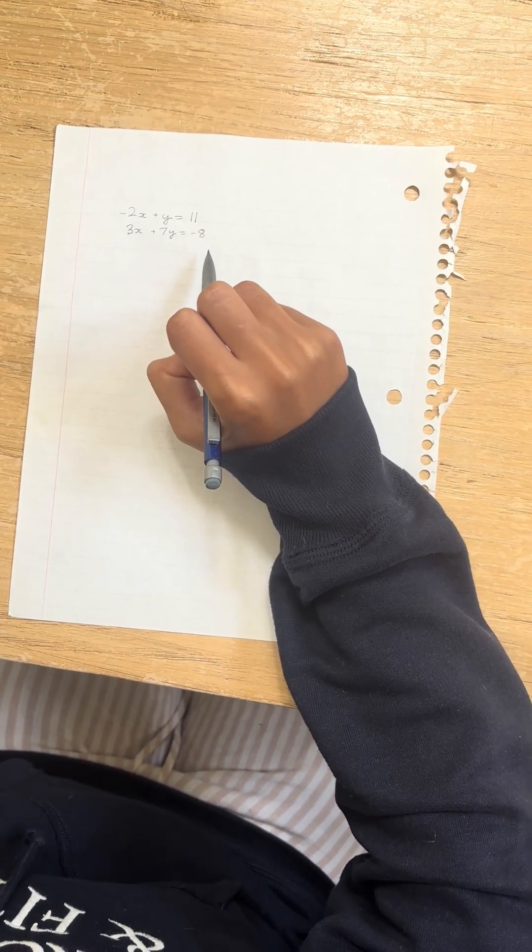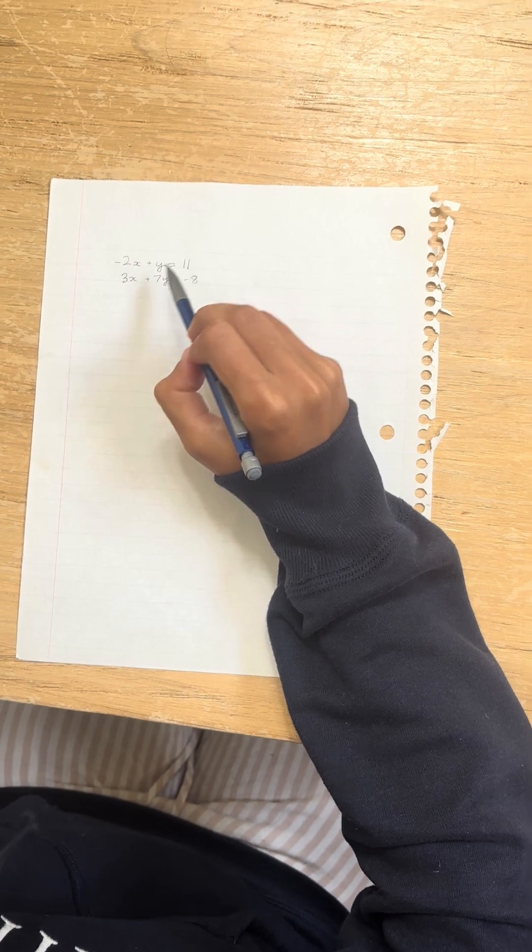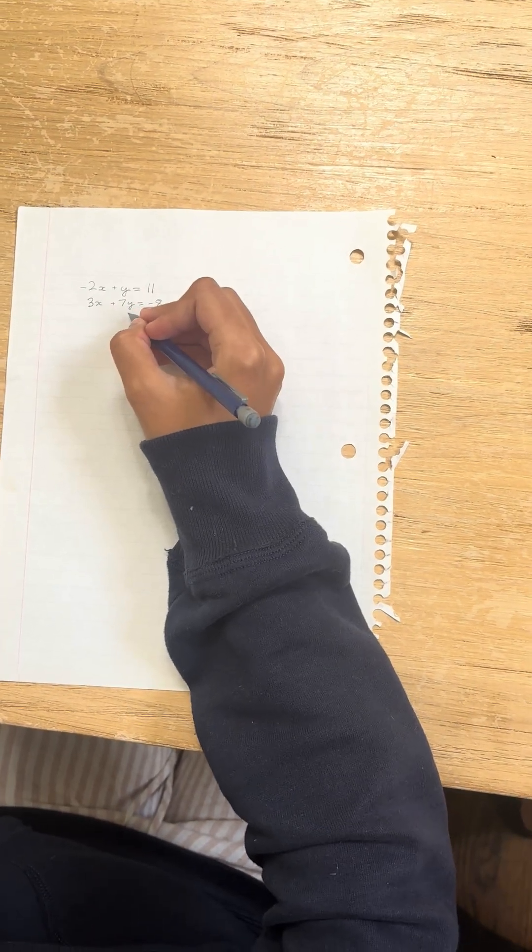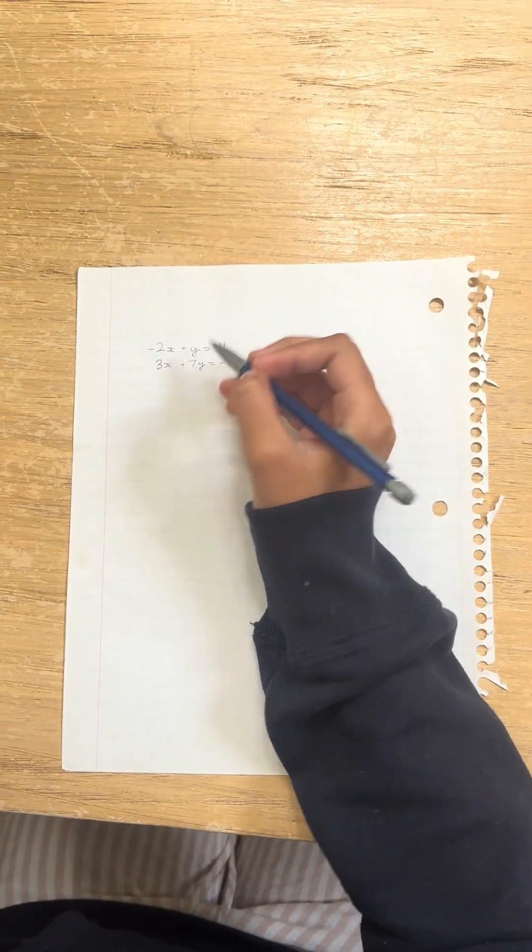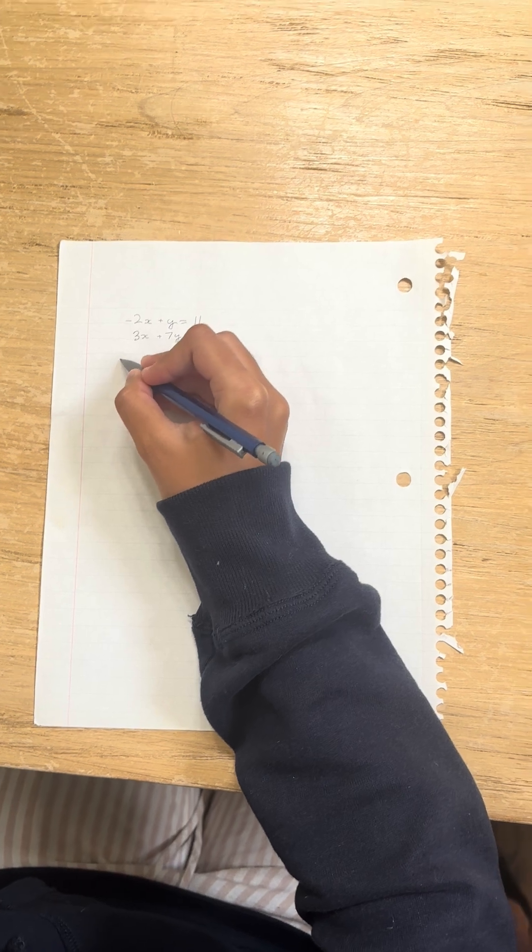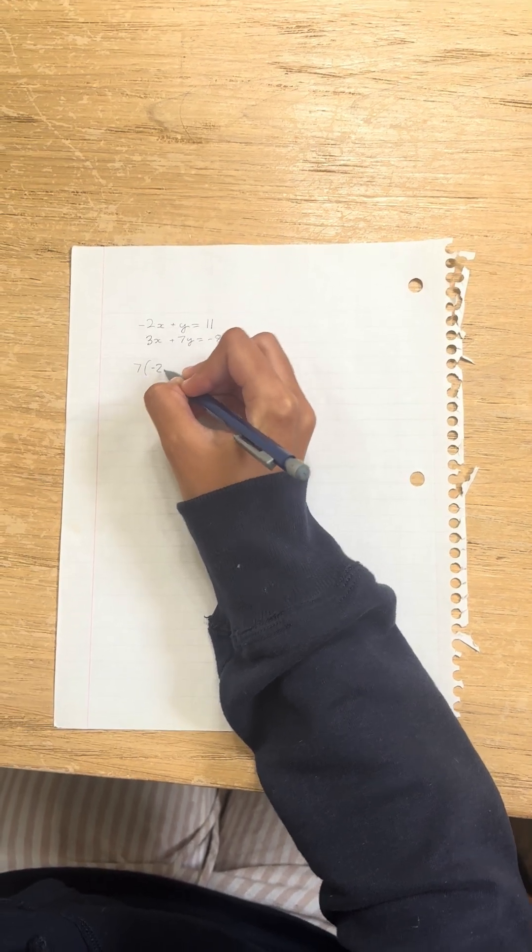Well, in order to do that, we have to make the first equation have the same y value. And as you can see here, we have 7y, so we have to make this equation have 7y as well. In order to do that, we have to multiply the equation by 7. So we're going to do that.